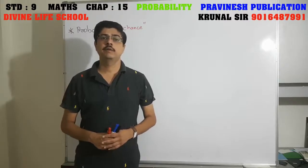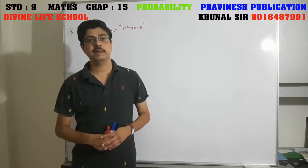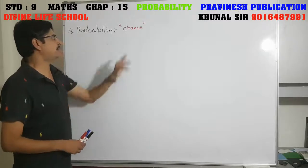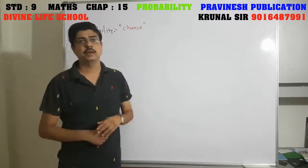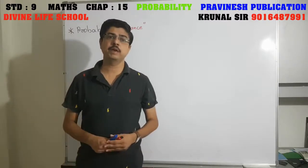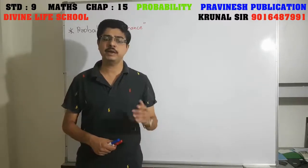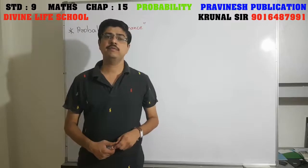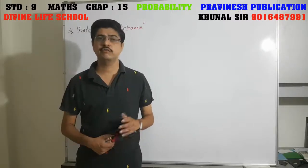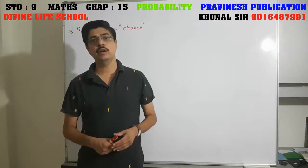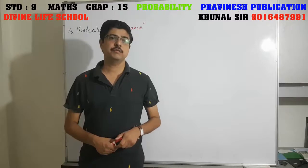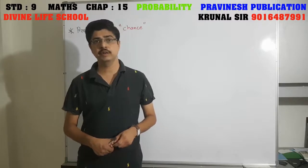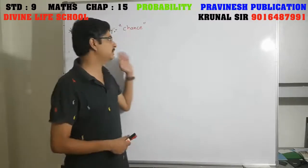Today I will explain standard 9 mathematics chapter 15: probability. The simple meaning of probability is chance. In general we discuss many things — for example, in monsoon we say probably it will rain or probably it will not rain. Another example: if there is a cricket match between India and Australia, we say maybe India will win or Australia will win. There is a 60% chance of India winning and 40% chance of Australia winning. These are all based on this chapter — probability.